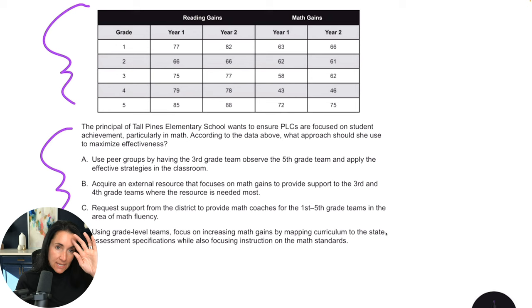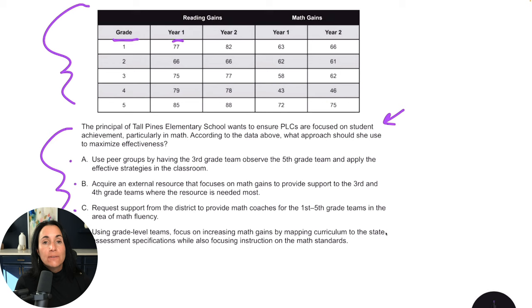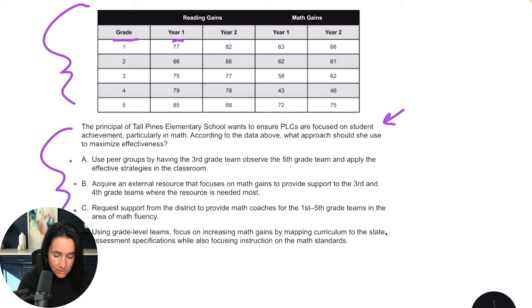So let's have a look at this question. We've got a set of data about reading and math gains, with grade level and years. I say do not look at the chart yet and don't even look at the question — go straight to the answer choices first. Answer A says: use peer groups by having the third grade team observe the fifth grade team and apply the effective strategies in the classroom. I like this — it's basically saying third grade teachers will work with fifth grade teachers to figure out the best strategies.